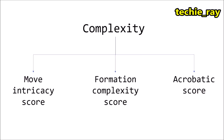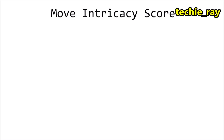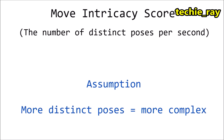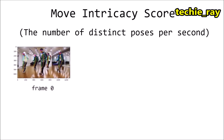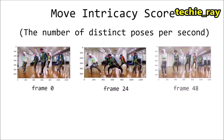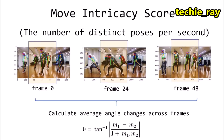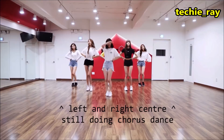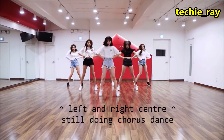First, the computer analyzes the intricacy of the individual's dance moves. This measures the number of distinct poses that a dancer strikes within a given second — the more poses, the more intricate the dance. For every frame, the computer will only calculate the average intricacy score among three members in the center, so that if the center member does solo moves, the other two center members offset any deviations.